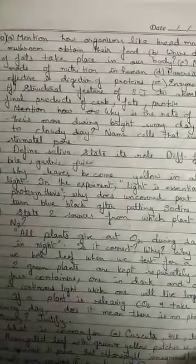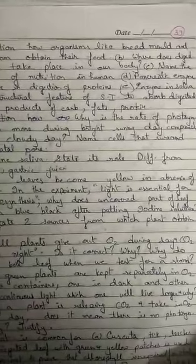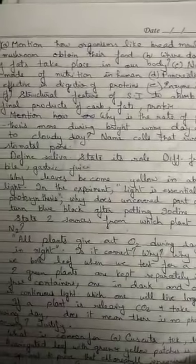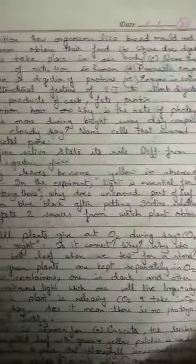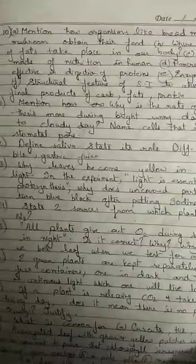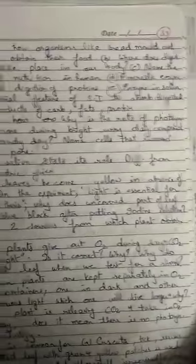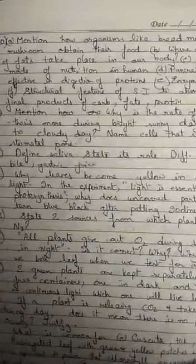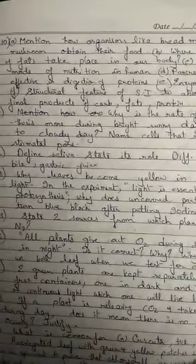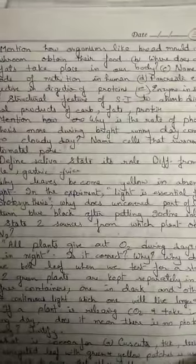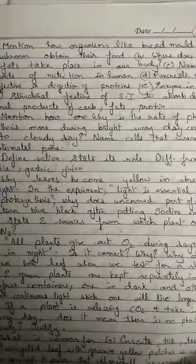The pancreatic enzyme effective in digestion of protein is trypsin. The enzyme present in saliva is salivary amylase. The structural feature of the small intestine that helps absorb digested food is the presence of finger-like projections known as villi and microvilli.